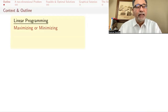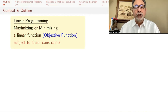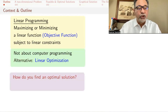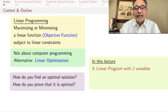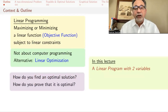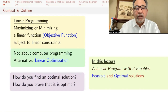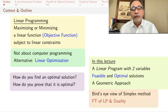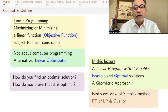Briefly and simplistically, linear programming is when you want to maximize or minimize a linear function called the objective function subject to linear constraints. It's not about computer programming, and an alternative name — maybe a better name for it — would be linear optimization. The questions we want to ask are: how do you find an optimal solution, and how do you prove that it's optimal? In this lecture we'll look at a linear program with only two variables — very few in real life, as linear programs have thousands and thousands of variables — but this will allow us to talk about feasible and optimal solutions and give a geometric approach to solving it. Along the way, we'll also get a bird's eye view of what the simplex method does, the fundamental theorem of linear programming, and duality — all subjects of future videos.